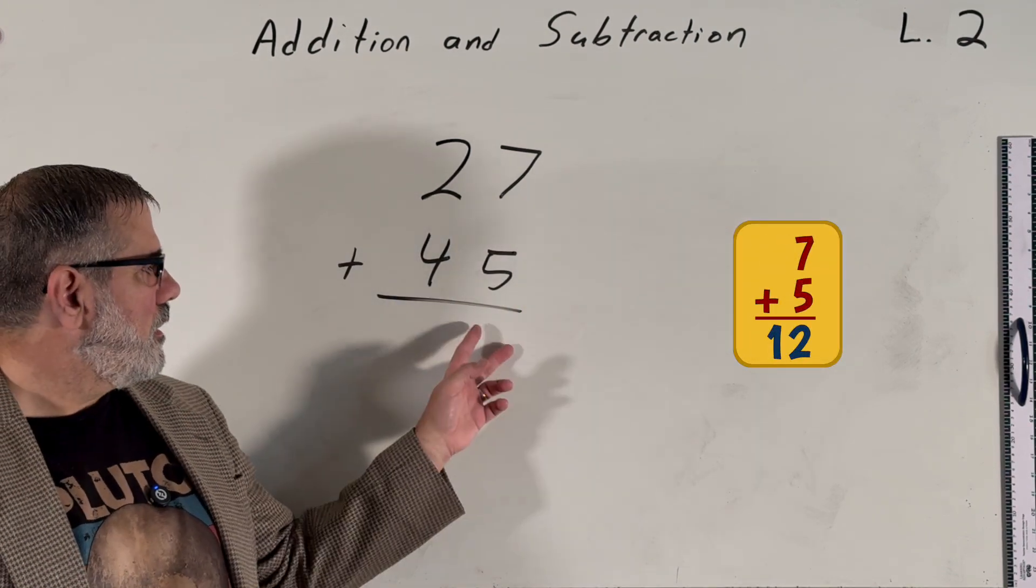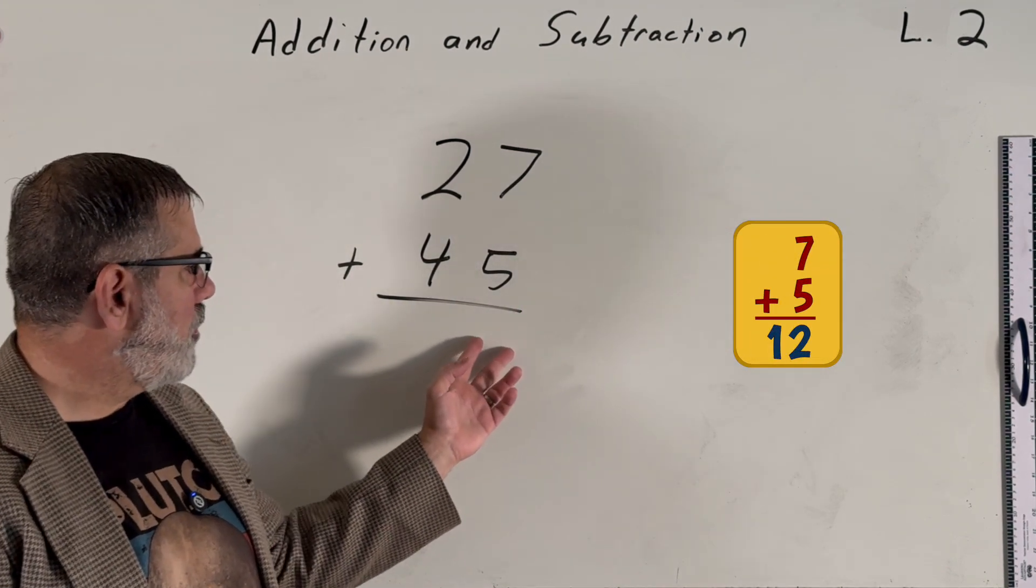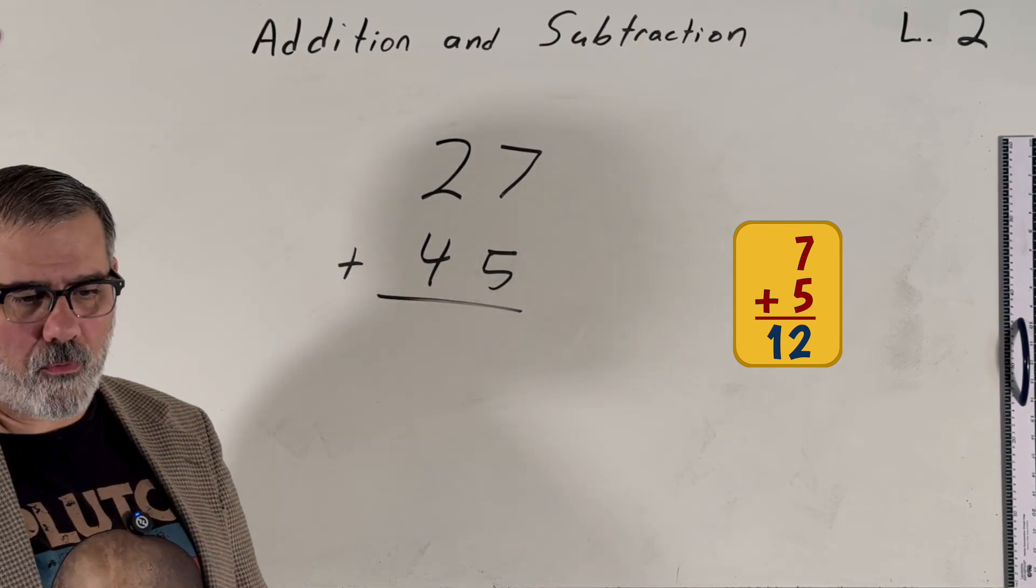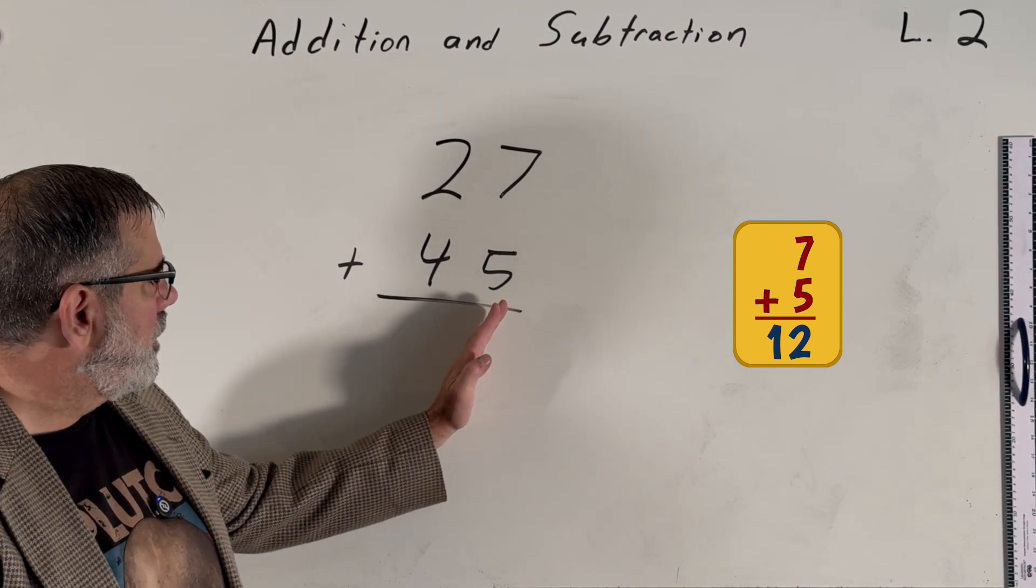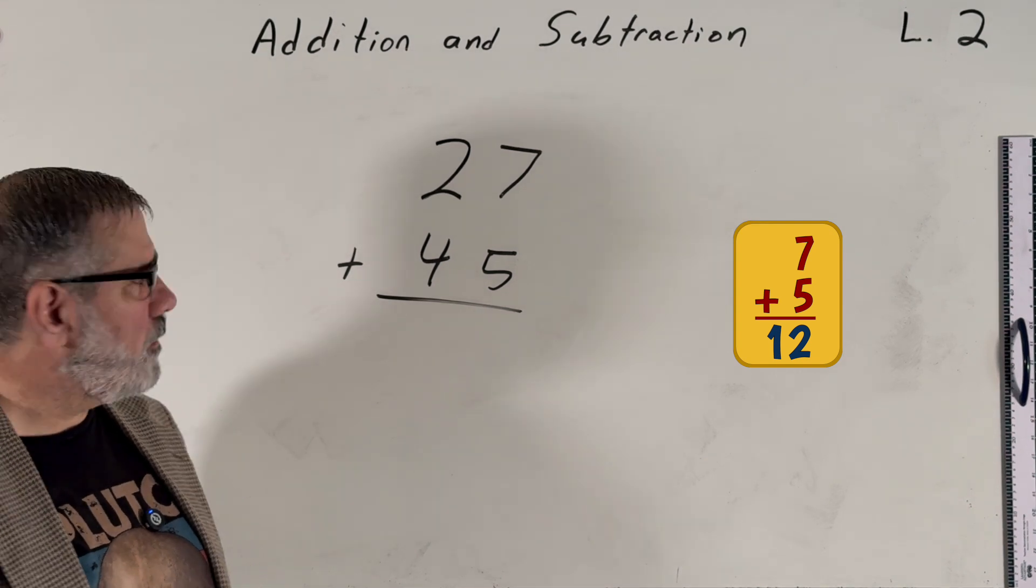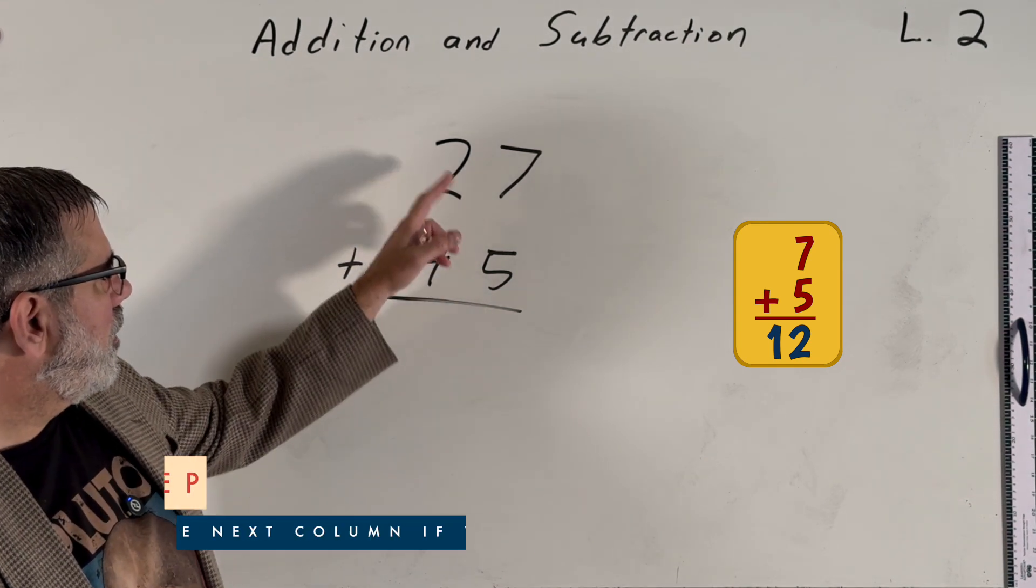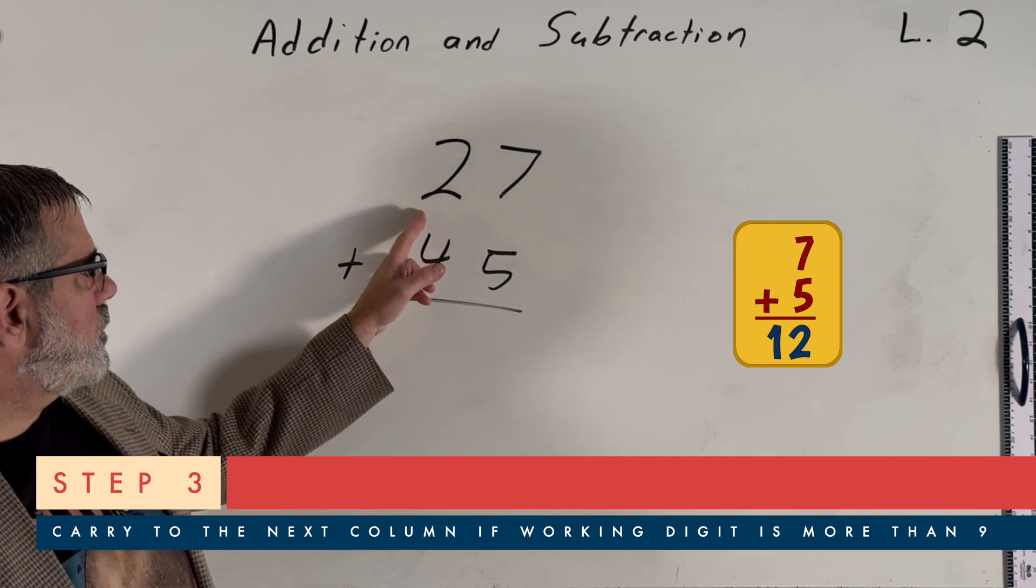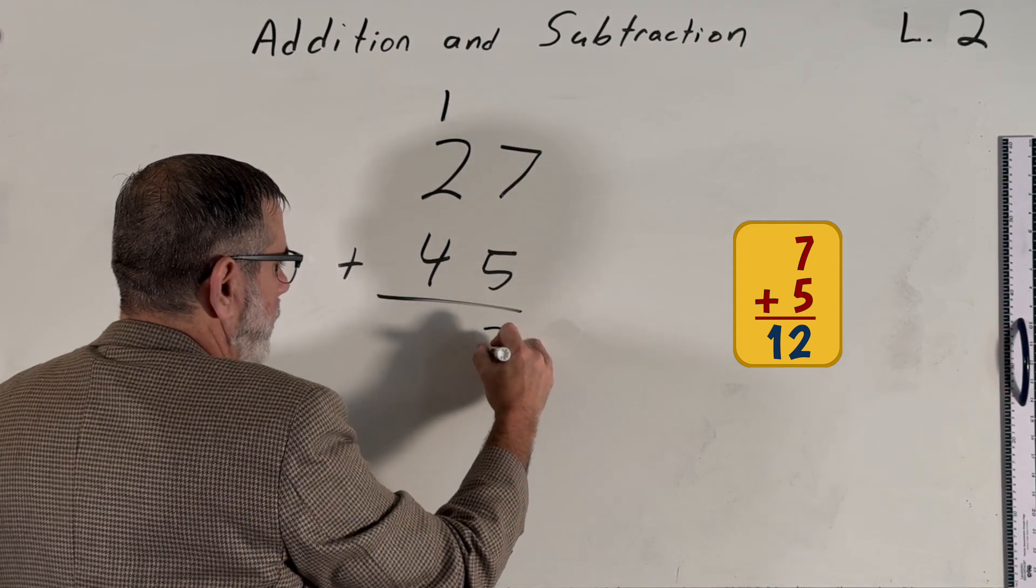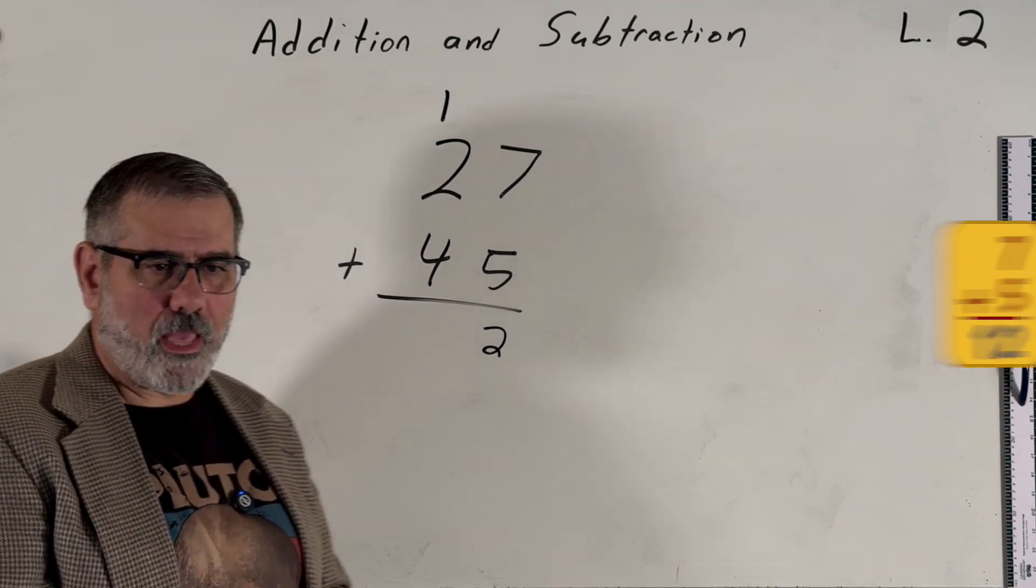And the problem is that you're not allowed to write more than one digit in the answer section in this column. So how do we write the number 12 without using more than one digit? Well, that's easy. We're going to have to carry 10 from that 12 over to the next column. We write it like this, and we just write the two from 12 here in the answer section.